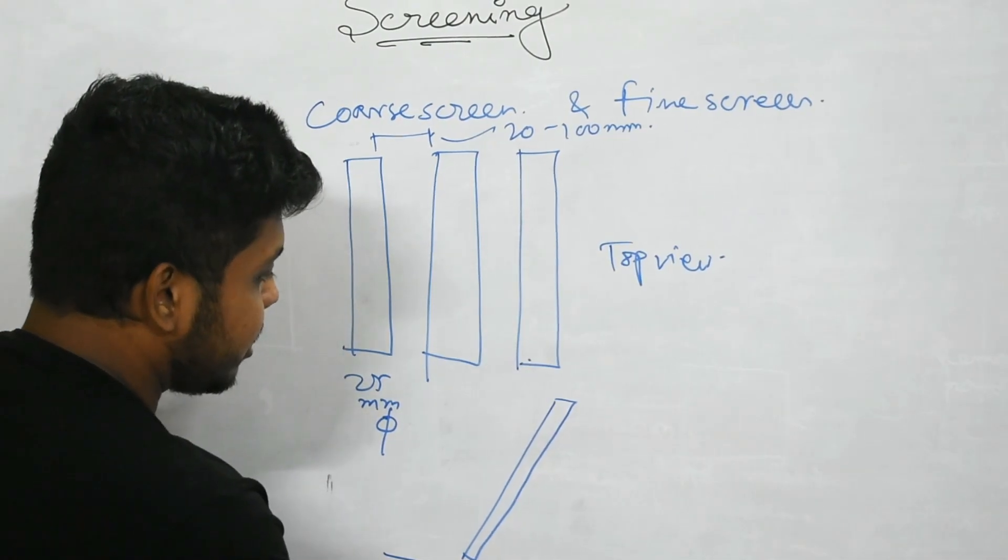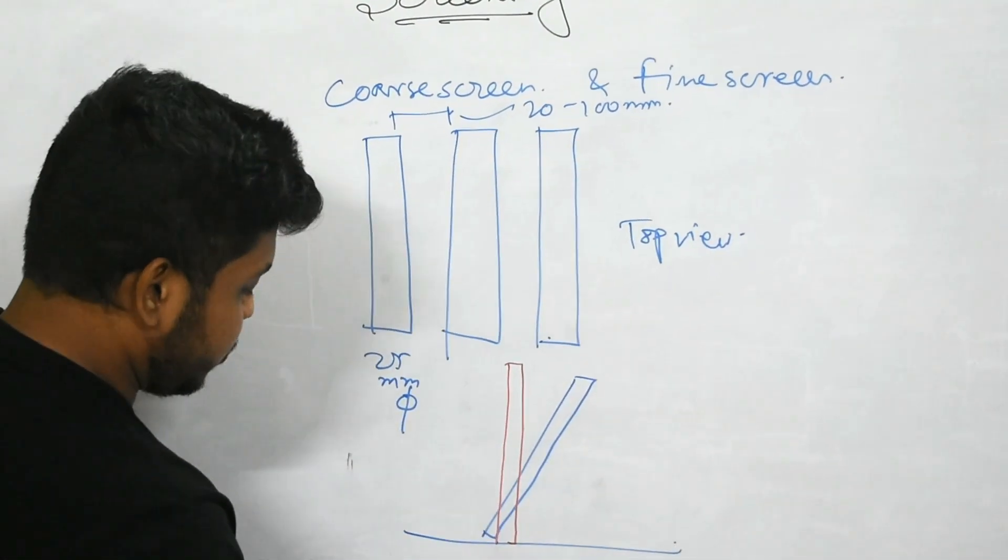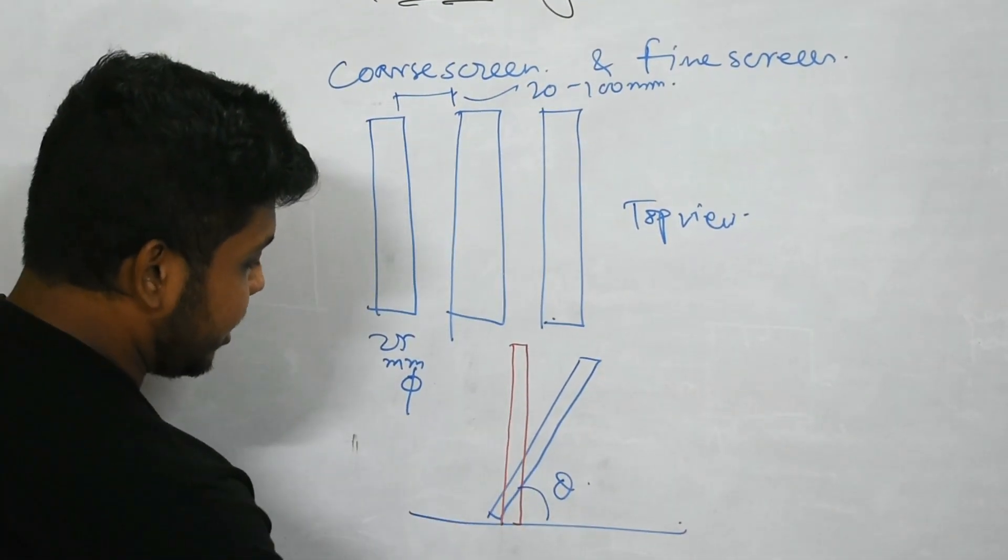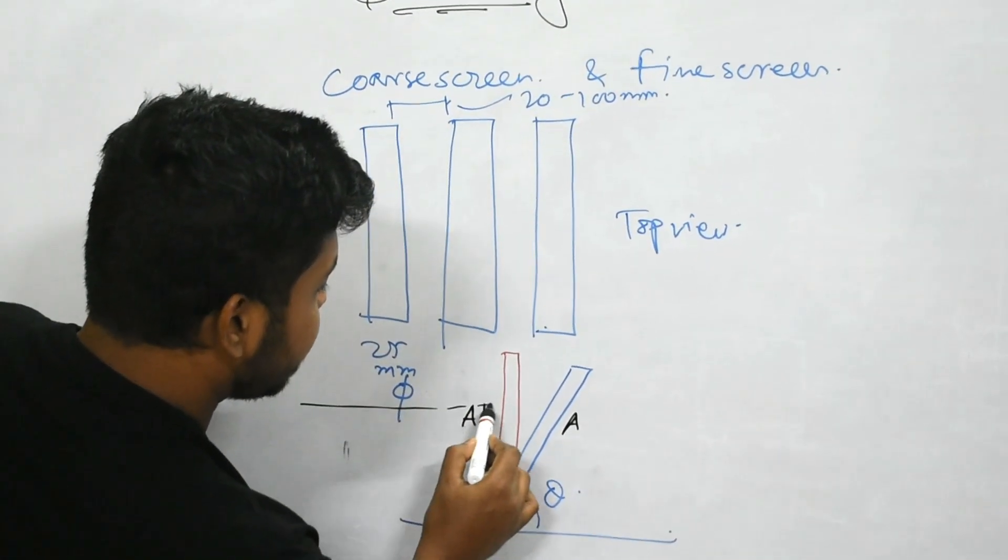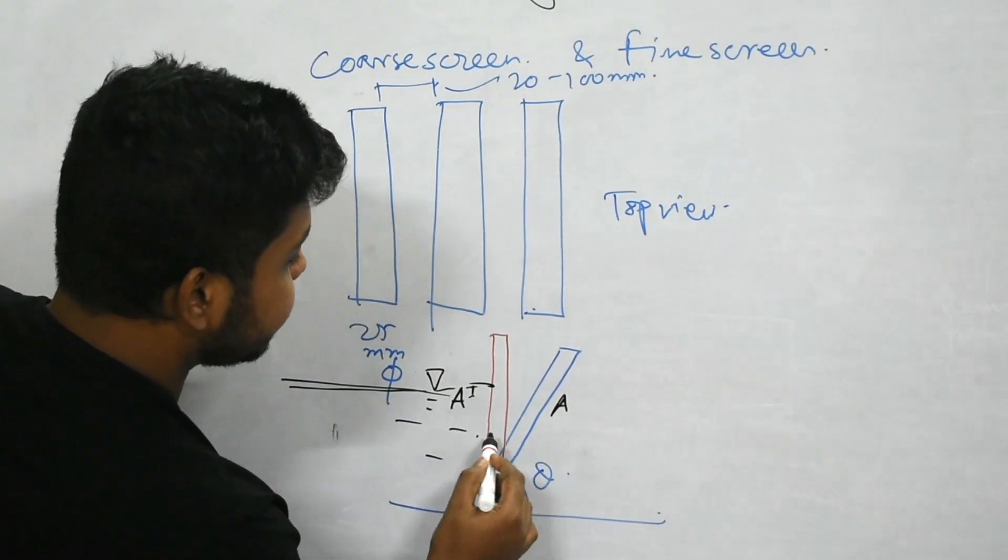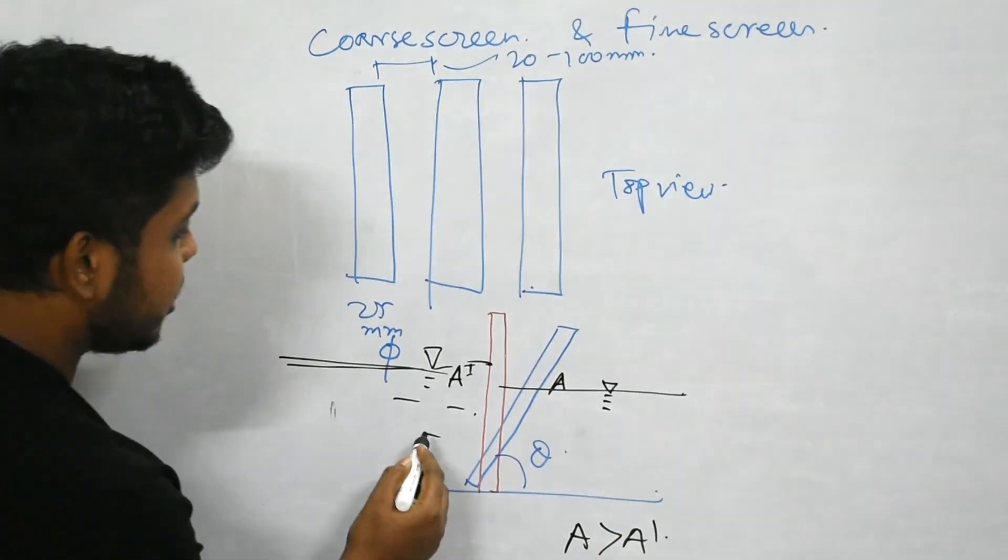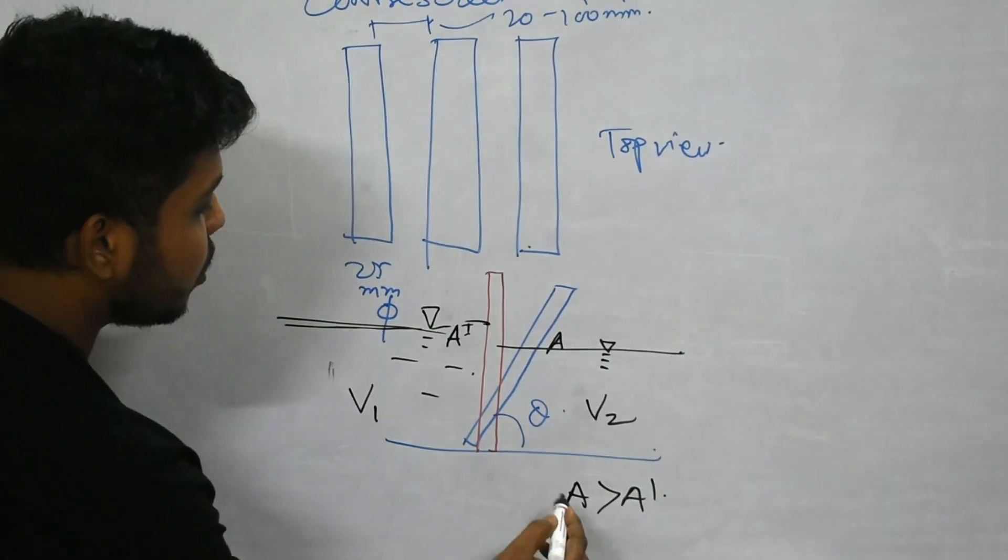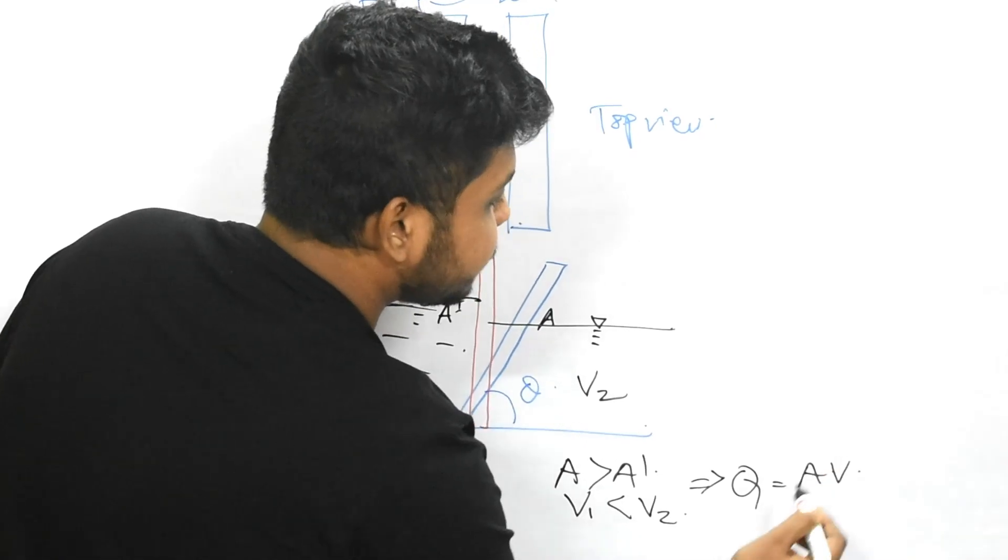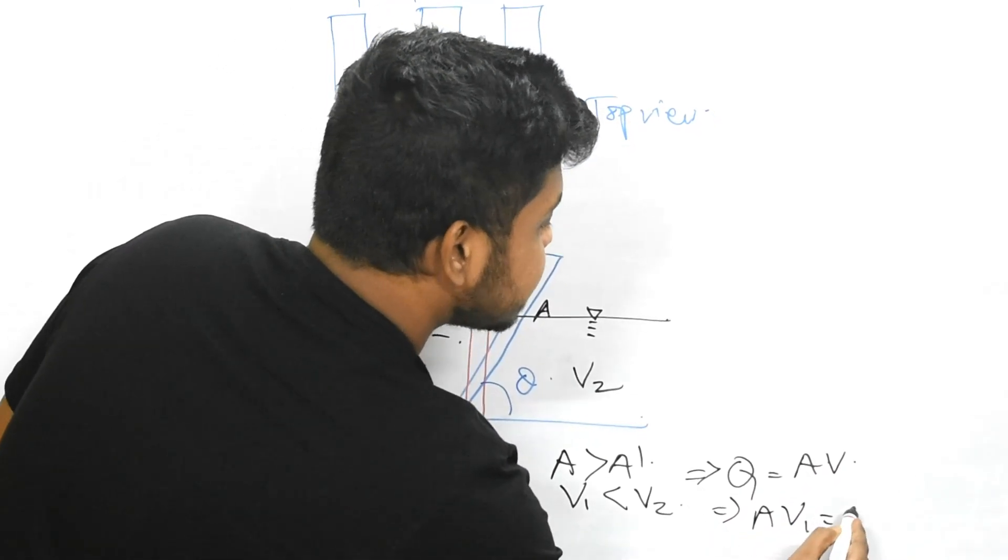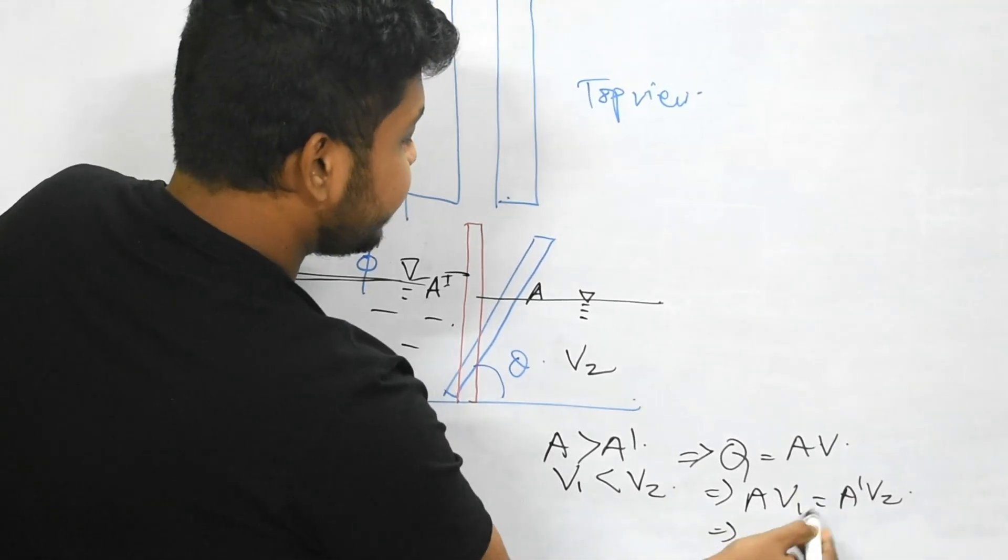We will check if these bars are provided in some vertical alignment versus at an angle theta. If this area is A' and this new area is A, the water coming from this side will have different velocities. A will be more than A'. If this velocity here is v1 and here velocity is v2, then v1 will be less than v2 as Q equals A into v. To maintain this, A into v1 equals A' into v2. As A is greater than A' to maintain the flow, v1 will be less than v2.